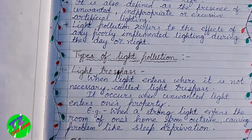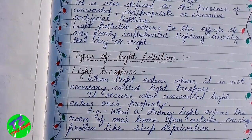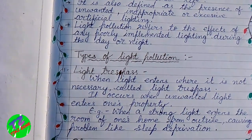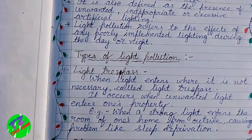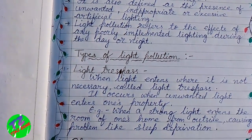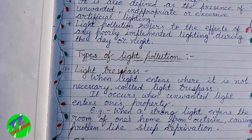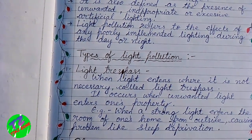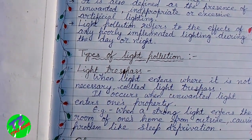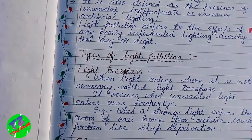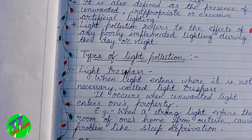Light trespass occurs when unwanted light enters one's property. For example, when a strong light enters the room of one's home from outside, causing problems like sleeping disturbances, that is an example of light trespass.